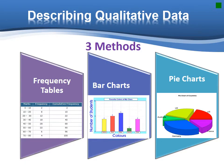There are three methods: frequency tables, bar chart, and pie chart. Now, let's see the frequency table first.